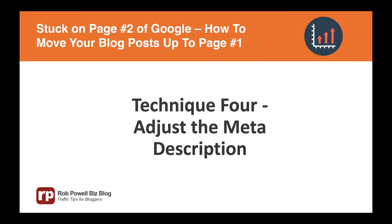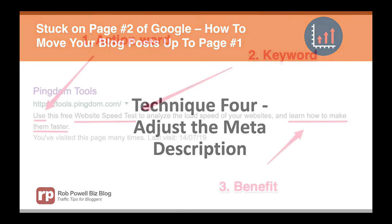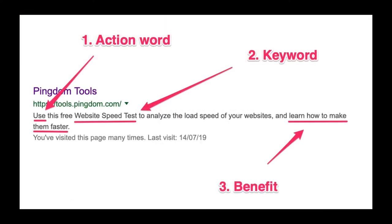Technique 4: Here are three techniques for optimizing your meta description. 1. Start the meta description with an action word, such as 'discover,' 'get,' or 'increase.' 2. Make sure the meta description contains your keyword. 3. Make sure the meta description contains a benefit.